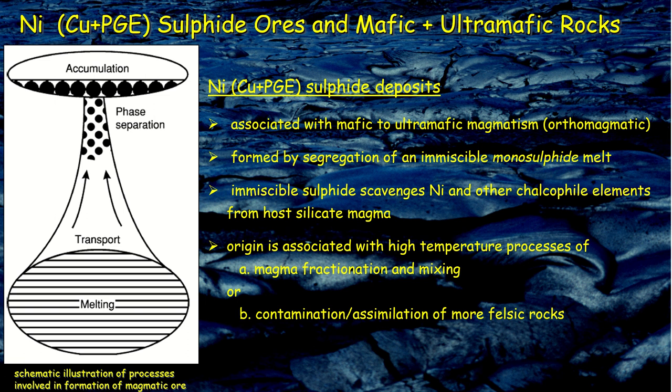Nickel sulfide ores are typically associated with mafic and ultra-mafic magmatism. In their simplest form, they are formed by segregation of an immiscible monosulfide melt from the host magma. This immiscible sulfide scavenges nickel and other chalcophile elements from the host silicate magma very efficiently. The partition coefficient for nickel and especially PGEs into sulfide melts is very high, making it a very effective way of concentrating these elements into an ore body.